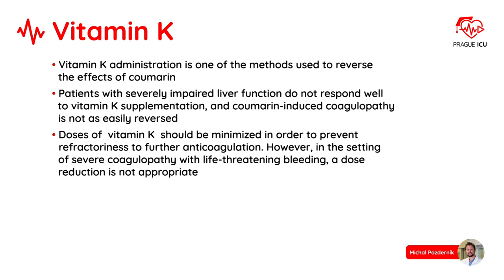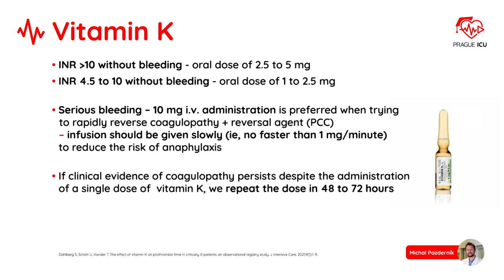Vitamin K administration is one of the methods used to reverse the effects of coumarins. Patients with severely impaired liver function do not respond well to vitamin K supplementation and coumarin-induced coagulopathy is not easily reversed. Doses of vitamin K should be minimized to prevent refractoriness to further anticoagulation; however, in severe coagulopathy with life-threatening bleeding a dose reduction is not appropriate. In patients with INR above 10 without bleeding, the dose is 2.5 to 5 mg. In patients with INR 4.5 to 10 without bleeding, the oral dose is 1 to 2.5 mg. In patients with serious bleeding, 10 mg IV administration is recommended plus a reversal agent. If coagulopathy persists after a single dose, repeat the dose in 48 to 72 hours.